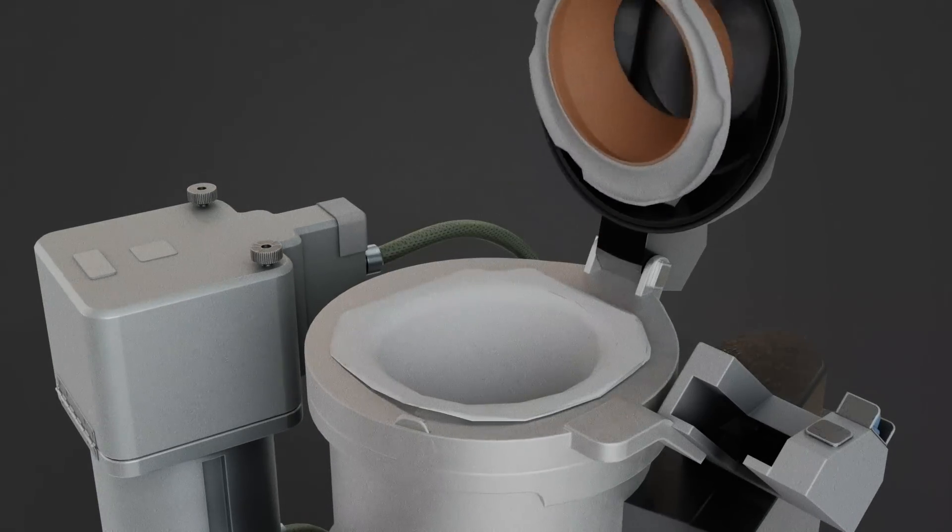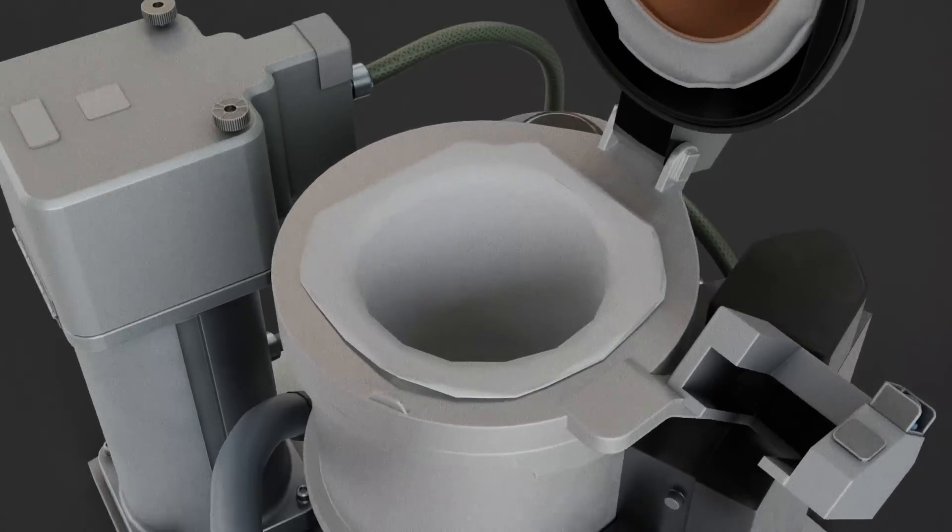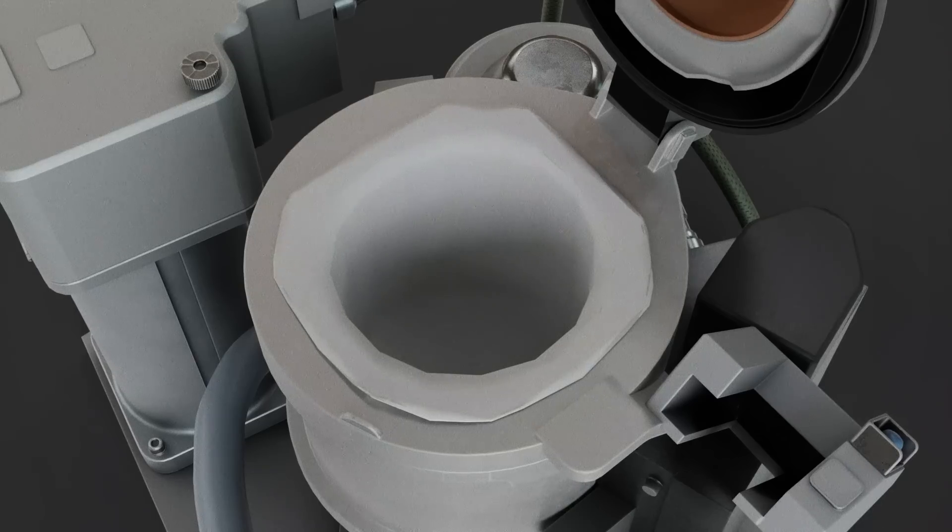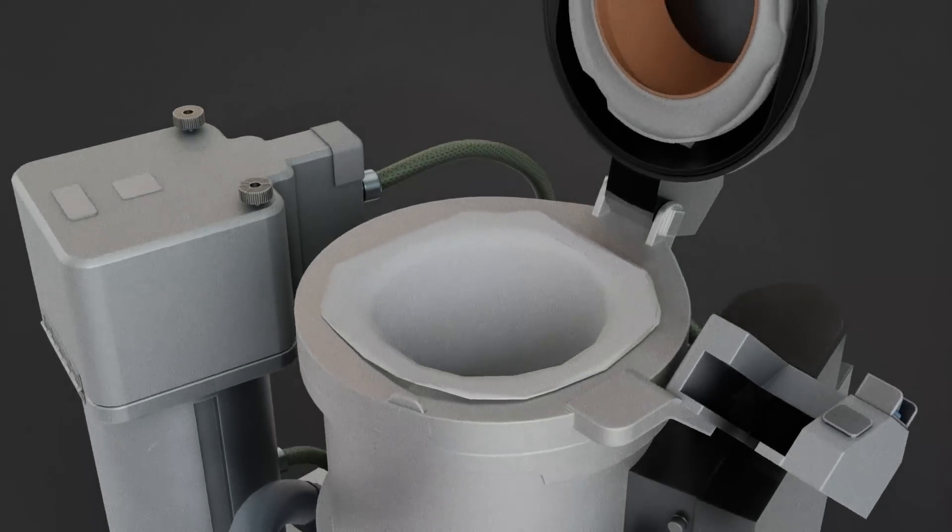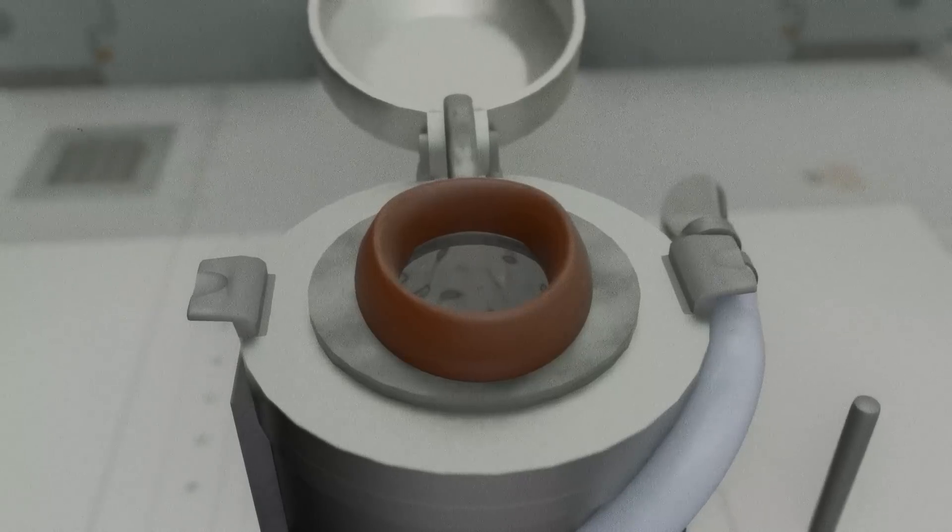The can also has vacuum suction to keep matter flowing away from the body, and the number twos are going to be held in a bag with an elastic opening to keep things tight. Once the operation is complete, the bag is sealed and compacted down into a storage container.